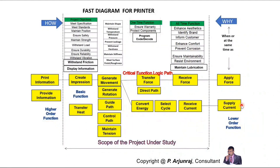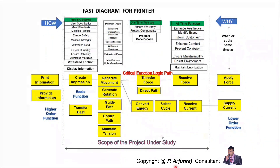For operating the printer, you need current. Supply current is out of scope; the printer receives current, then it starts a cycle, then it converts energy, then it generates moment, then it creates an impression.